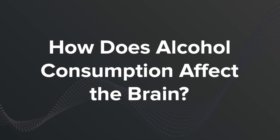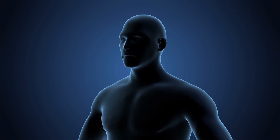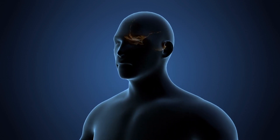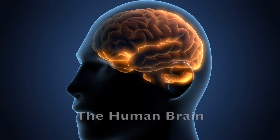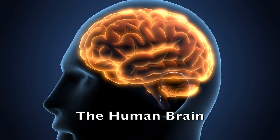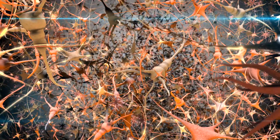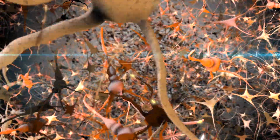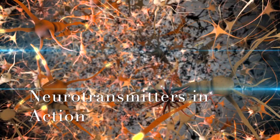Now let's take a look at the neurological impacts of alcohol consumption. To do so, we need to investigate how alcohol affects the brain. Here we can explain how alcohol intoxication impairs our ability to make decisions and act appropriately. Eventually, ethanol gets to the brain where it interacts with different chemical messengers called neurotransmitters.